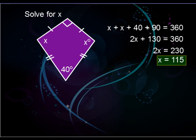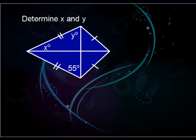Let's try another example, this time involving the diagonals already drawn — determine x and y. One of the first things you should notice immediately is that those diagonals are going to be perpendicular, which means you're going to have 90-degree angles right there in the center.